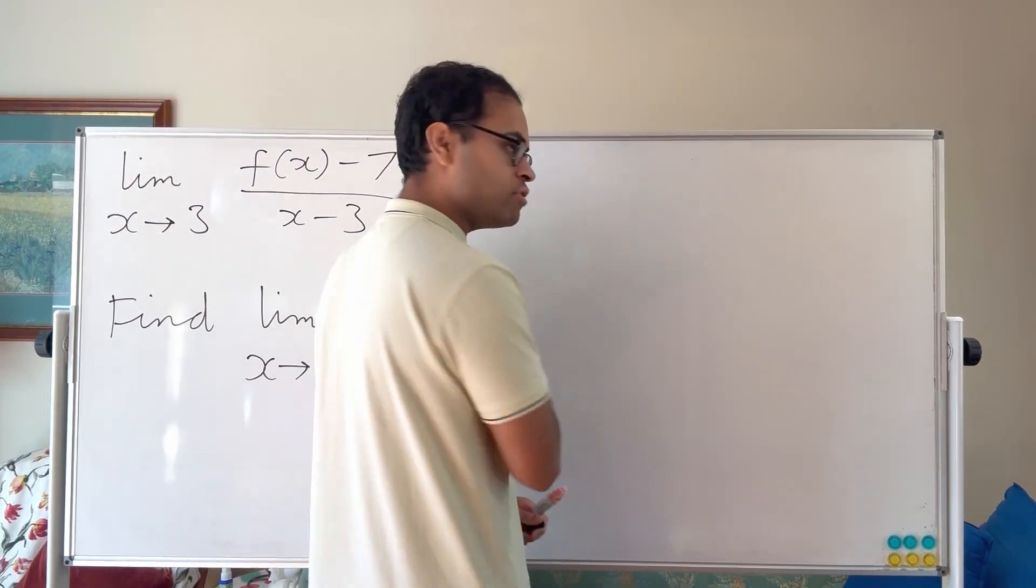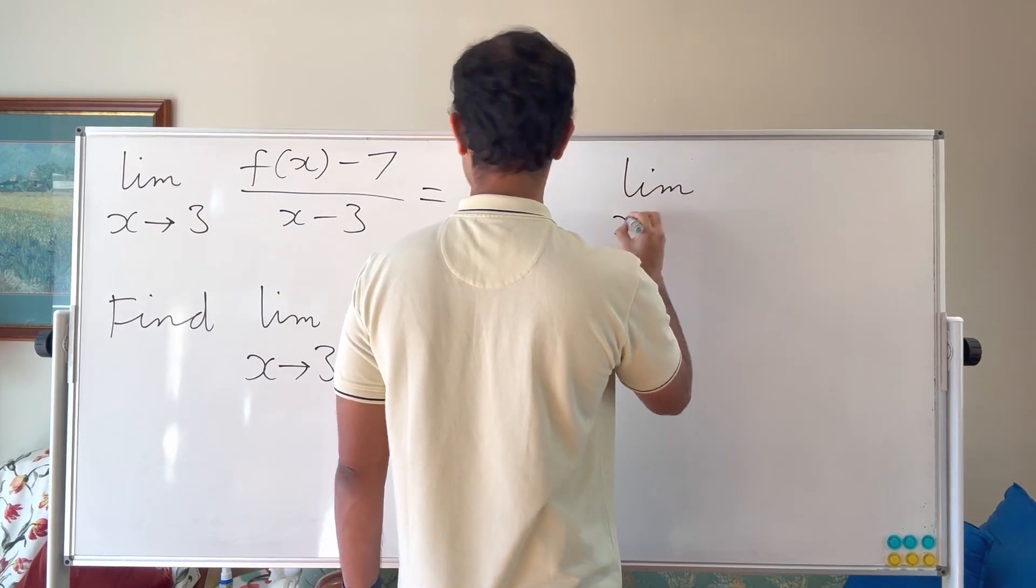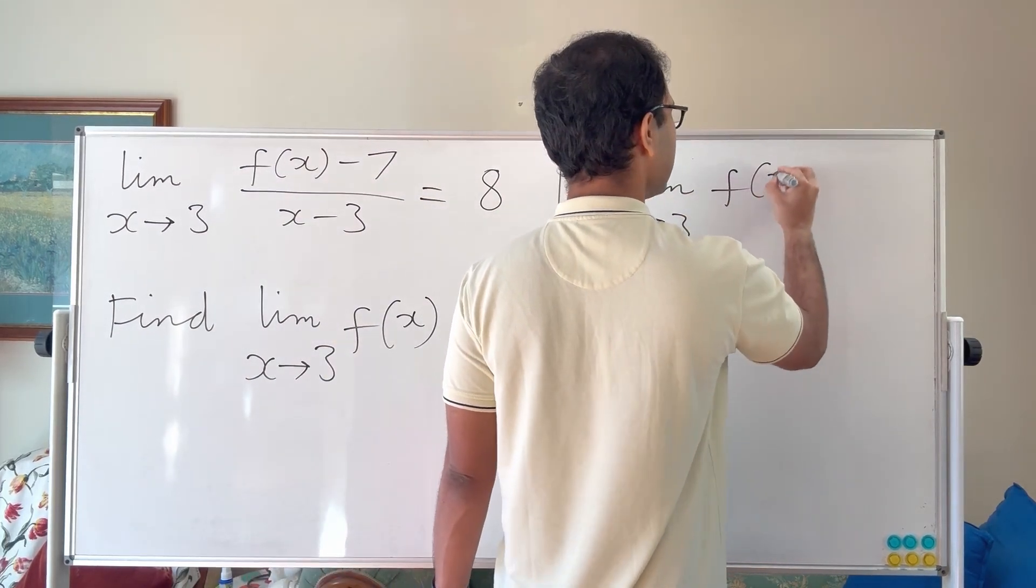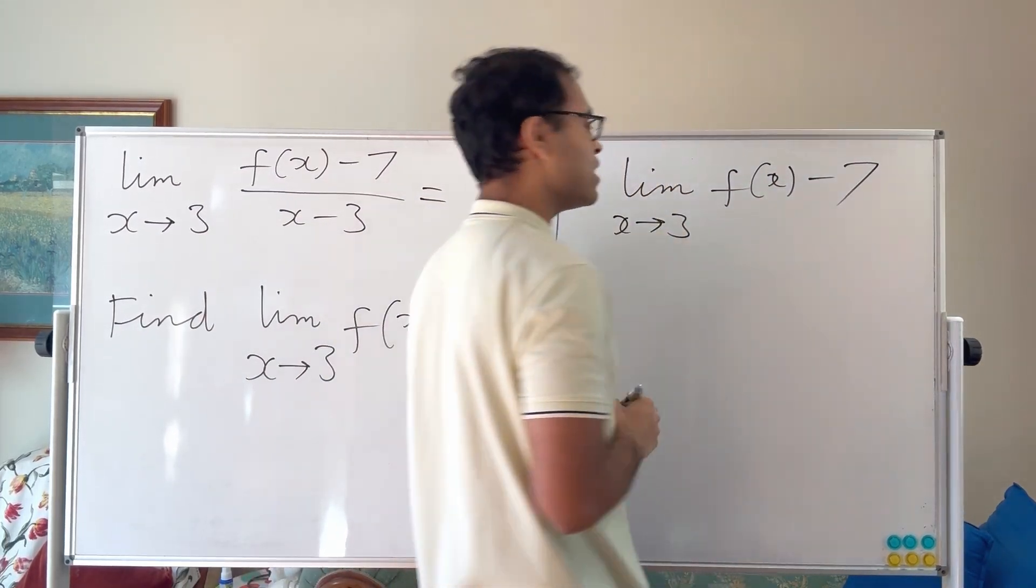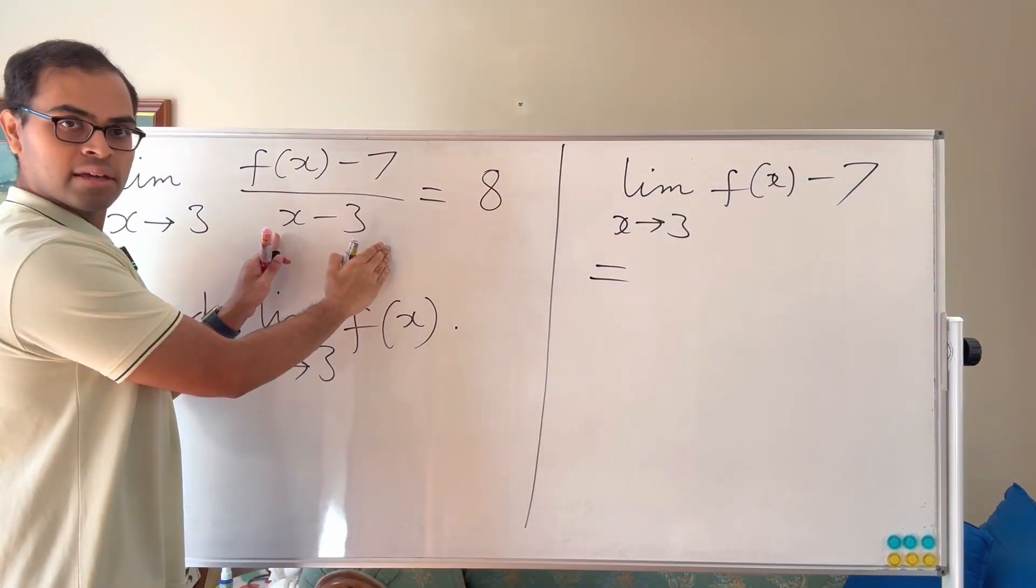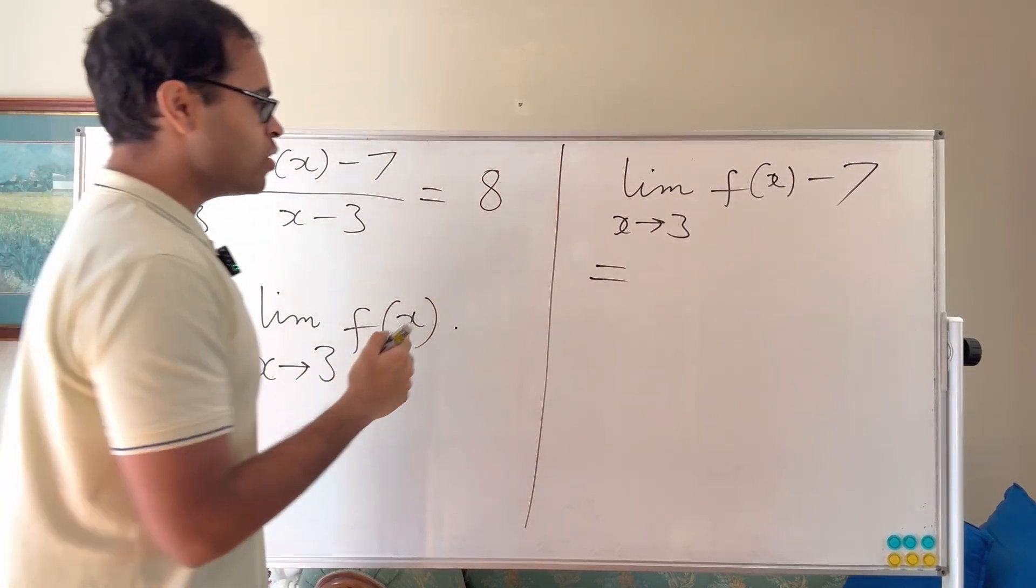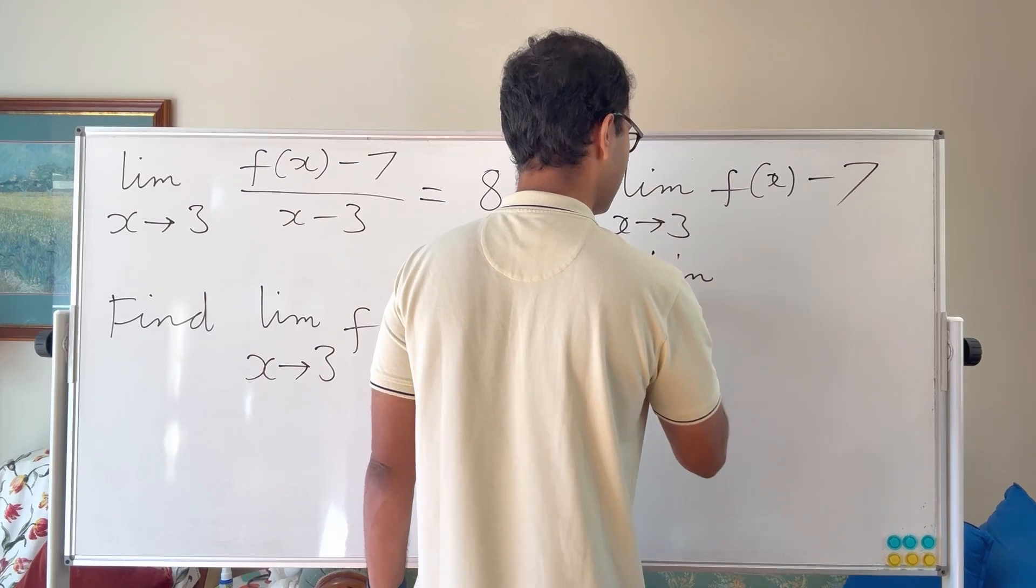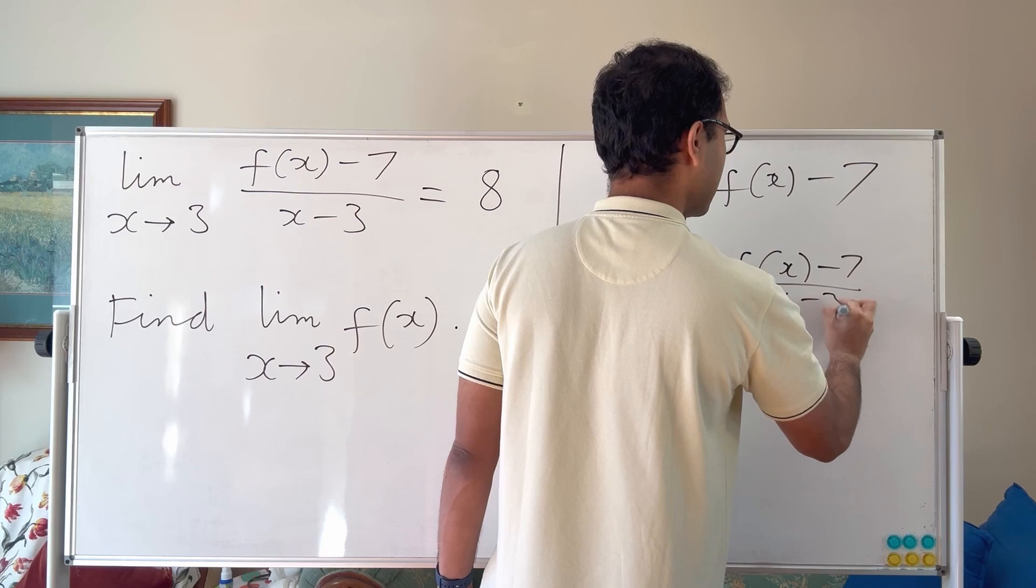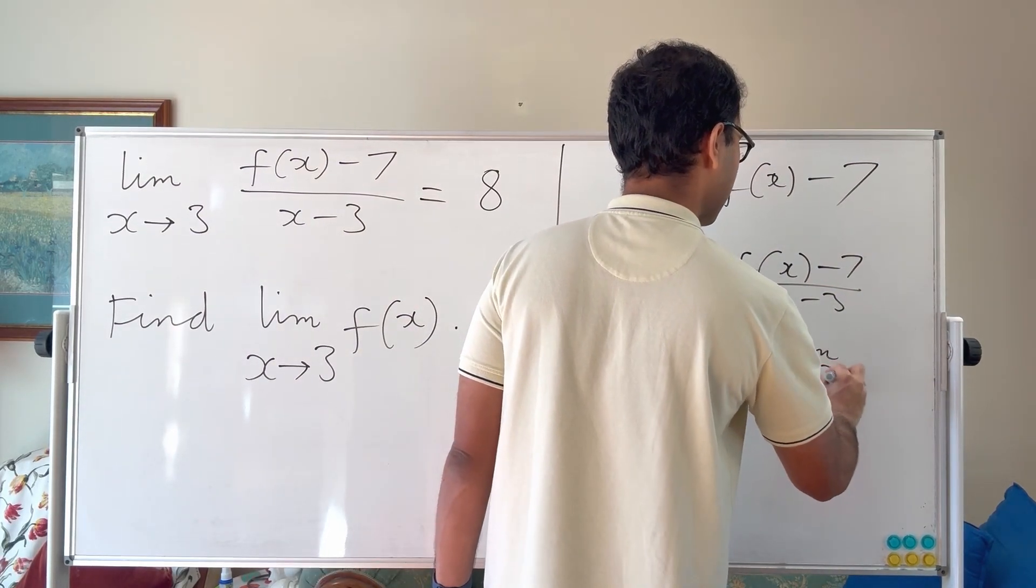So let's get into now the rigorous argument. So we're going to think about how to find this in two steps. The first step is we're going to find the limit as x approaches 3 of f of x minus 7. How are we going to do that? Well, we're going to understand that we know this limit. And if we multiply with another limit we know, we'll get another limit we know. So what we're going to do is take this as limit x goes to 3 of f of x minus 7 divided by x minus 3, times limit x goes to 3 of x minus 3.